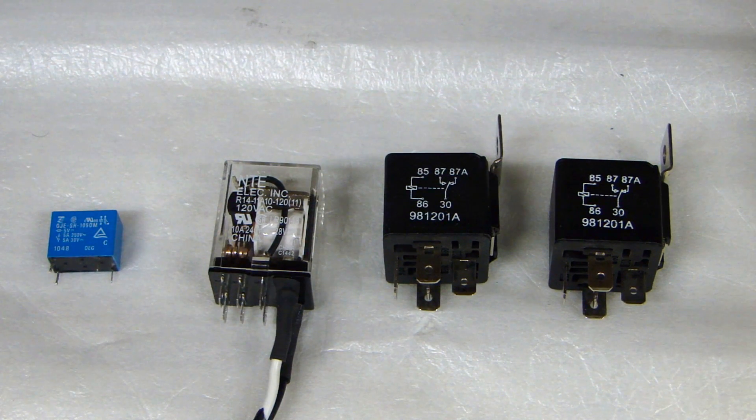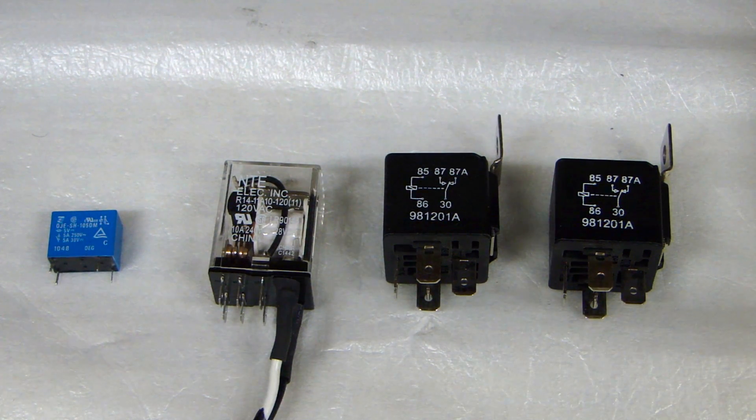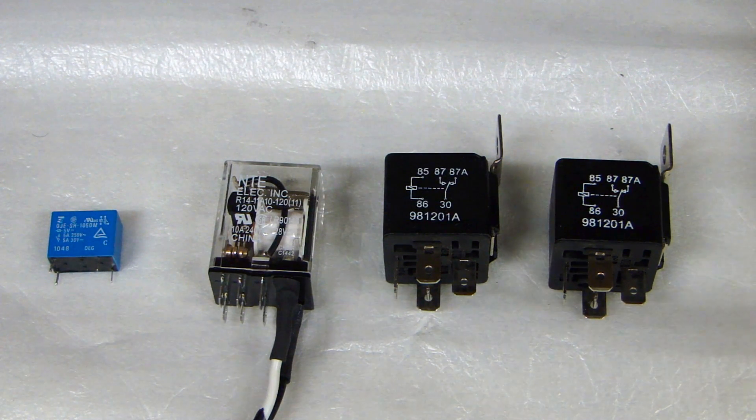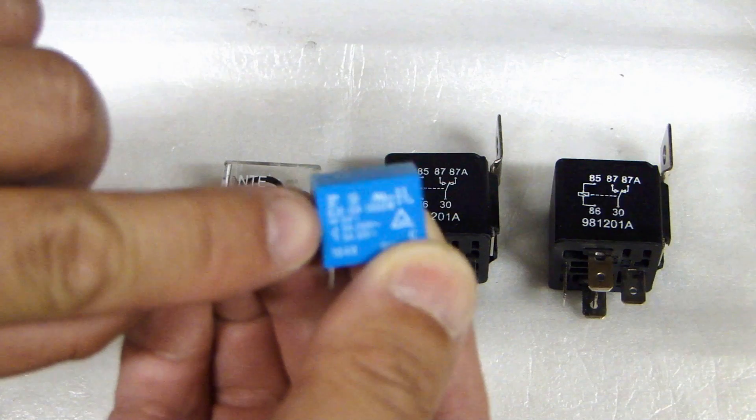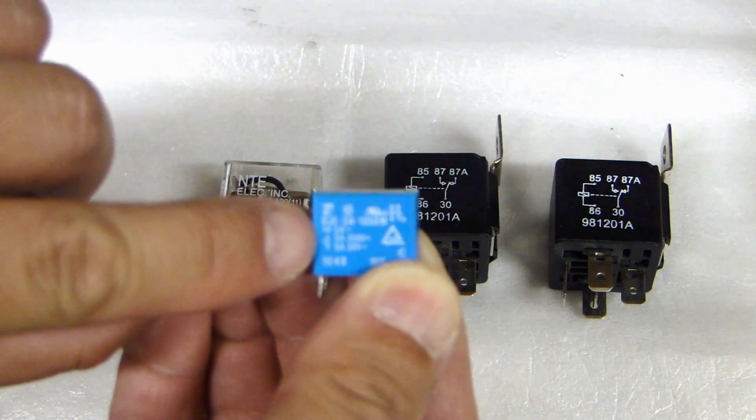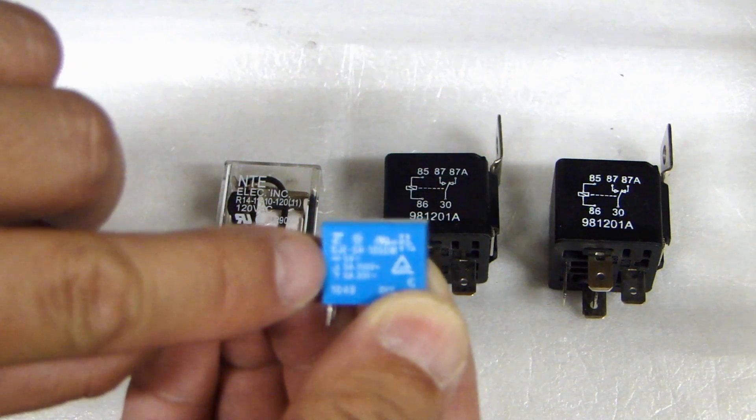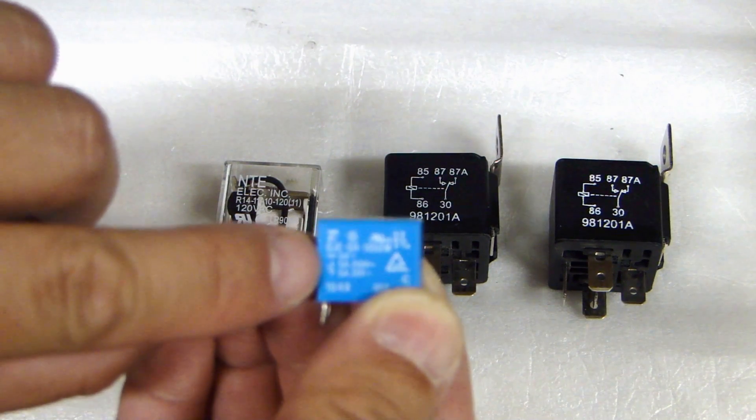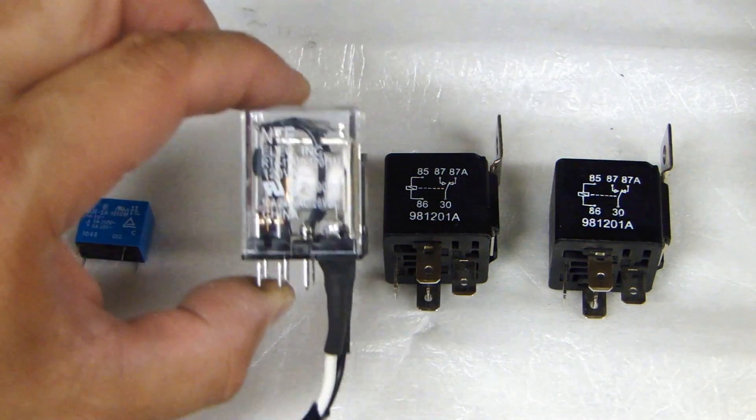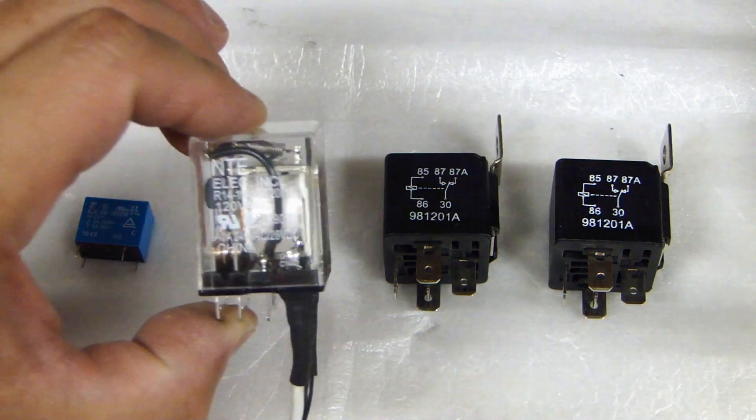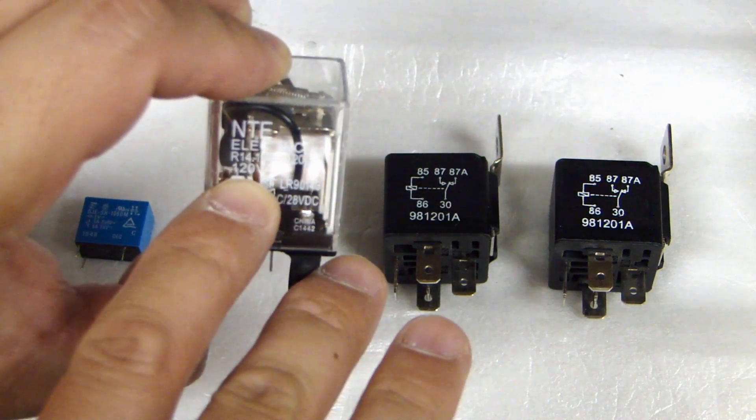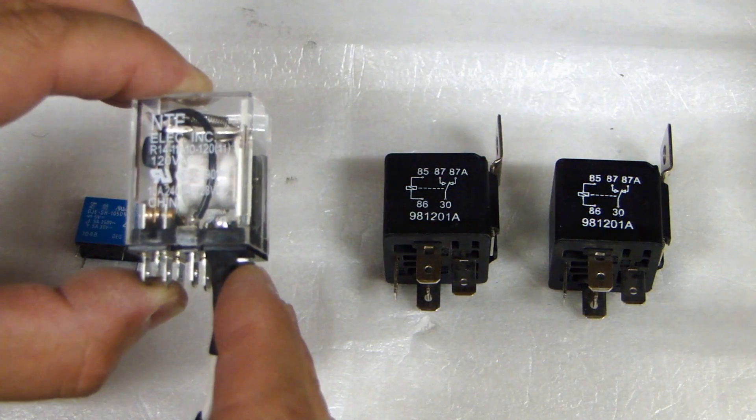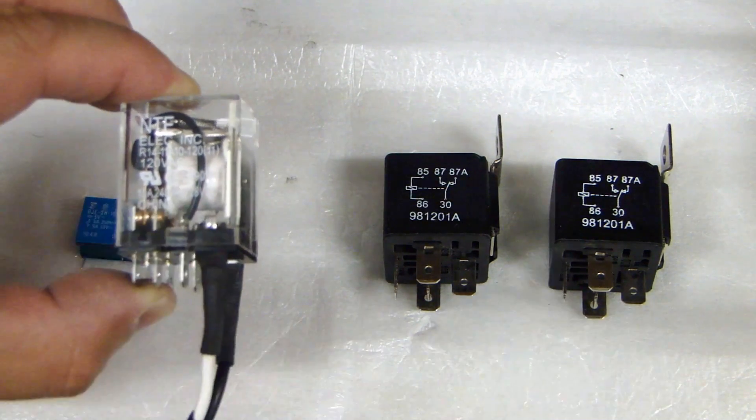When you're looking for a relay there are a couple of things you need to pay attention to. One is the voltage that's required to energize that coil. For example this little one right here, if you look closely it tells you that this is a 5 volt relay. It means that it requires 5 volt DC to energize the coil inside to close and open the switch. Here this is actually an AC relay. Right here it lists 120 volt AC. So you need to apply 120 volt AC to the coil for the relay to energize.